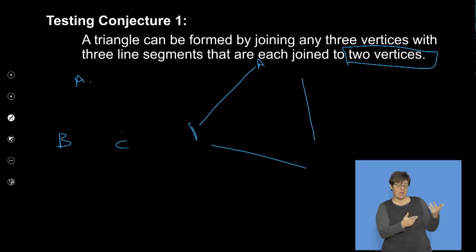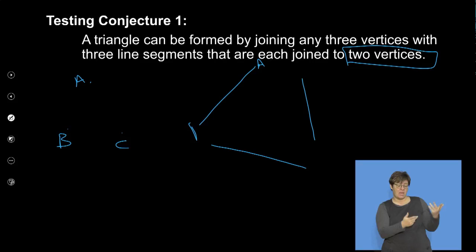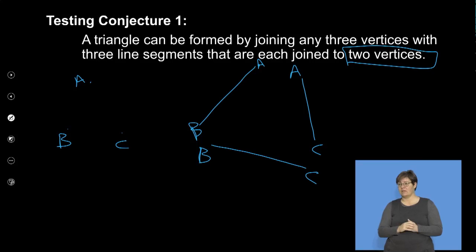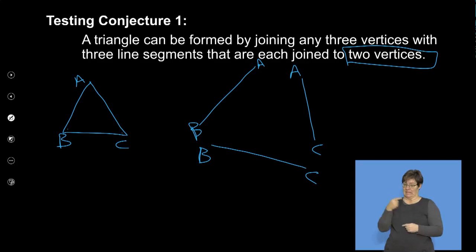So A might be at the top, B somewhere there, and the line between B and C, and another between A and C — and when joined they give me a triangle. That's what this conjecture says. But do you think we can disprove this conjecture? We are yet to see that just now.